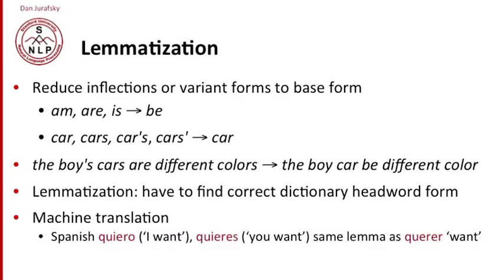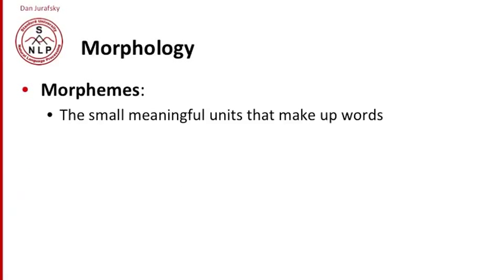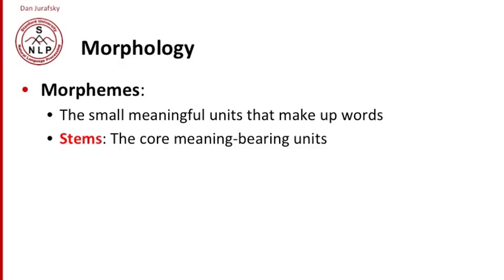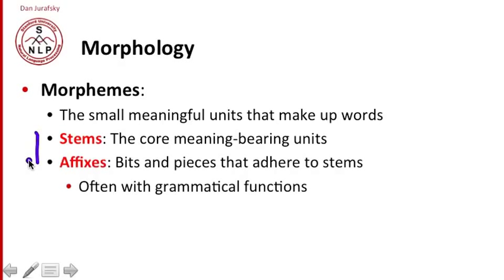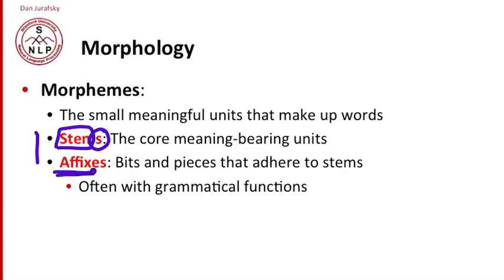This general topic of looking at parts of words leads us to morphology. Morphology is the study of morphemes, and a morpheme is the smallest unit that makes up a word. We usually distinguish two kinds of morphemes: stems, which are the core meaning-bearing units in a word, and affixes, the bits and pieces that adhere to the stem — often with grammatical functions. So on this slide, 'stem' is a stem and 's' is an affix. The word 'affix' itself is a stem, and 'es' is its affix.